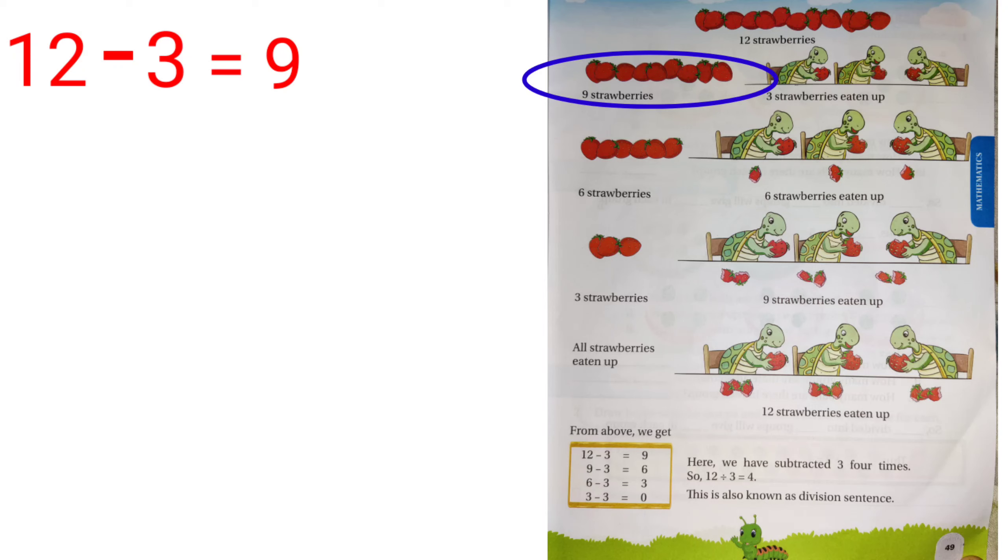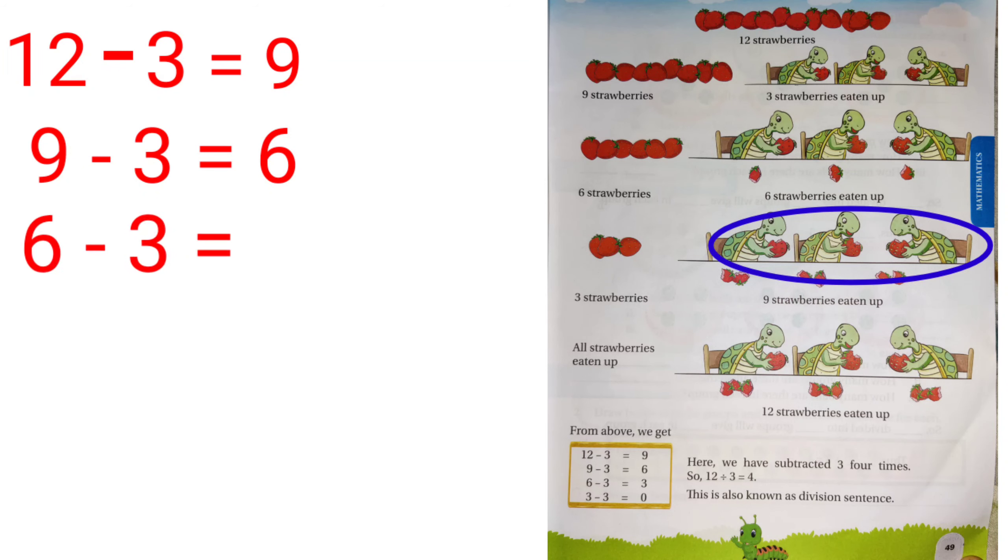Now, from that 9 strawberries, 3 more strawberries are eaten up. So, how many strawberries are left now? Only 6 strawberries. That is 9 minus 3 equal to 6. Now, again 3 strawberries are eaten up. That is 6 minus 3. So, how many strawberries are left? 3 strawberries.